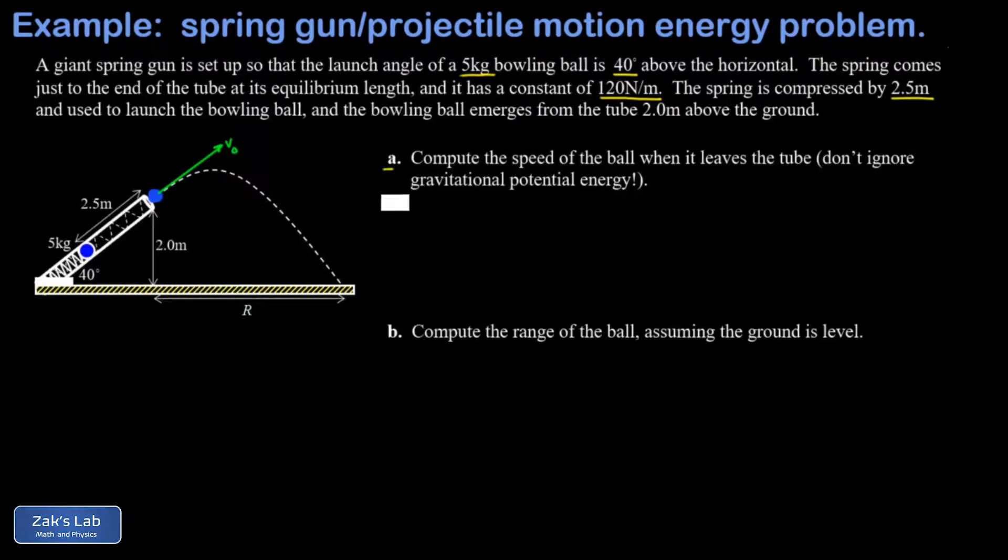The first part is approached with energy conservation. I have energy stored in the spring, but here's a warning in part A: you can't just ignore gravitational potential energy and pretend that the spring energy all goes into the speed of the ball, because the ball ends up higher than it was in its initial position. So that spring energy goes to two places: part of it is the increase in gravitational potential energy, and part of it is the increase in kinetic energy.